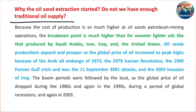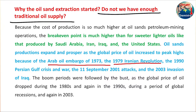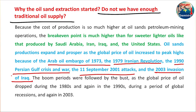So why did this extraction start if we have enough supply of traditional oil? The answer is complicated. We have proven petroleum reserves, but because of geopolitics — the Arab oil embargo in 1973, the Iranian revolution in 1979, the Persian Gulf crisis in 1990, the September 11, 2001 attacks, and the 2003 invasion of Iraq — all these conflicts are in the Middle East, which is the main oil production zone.